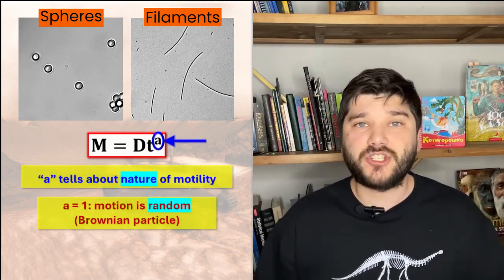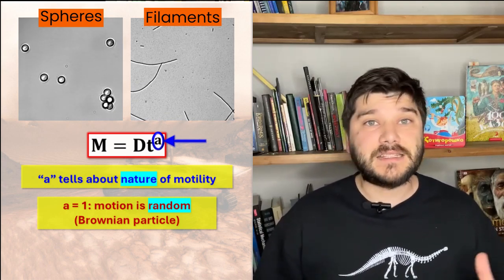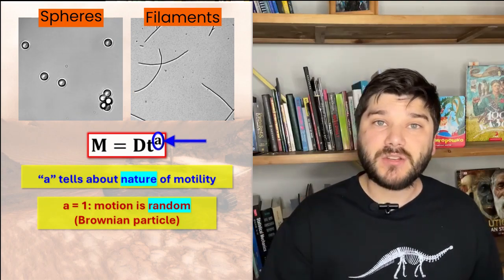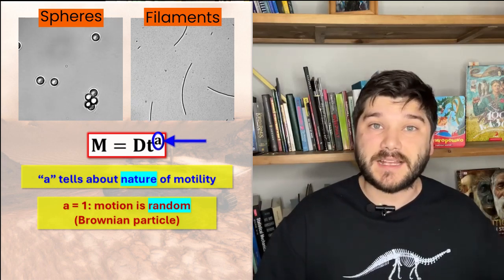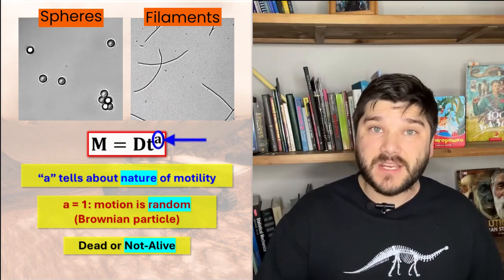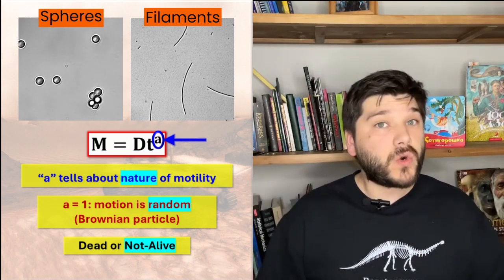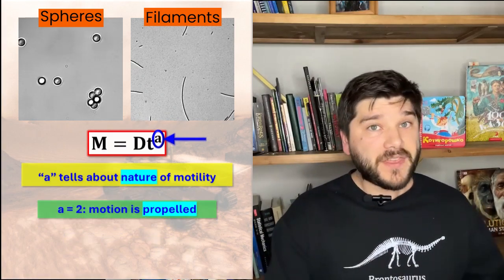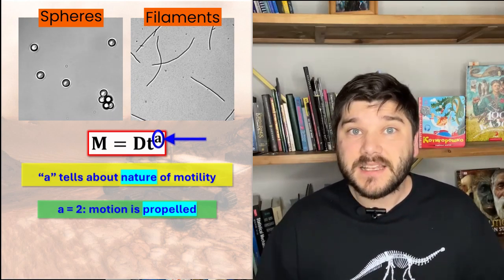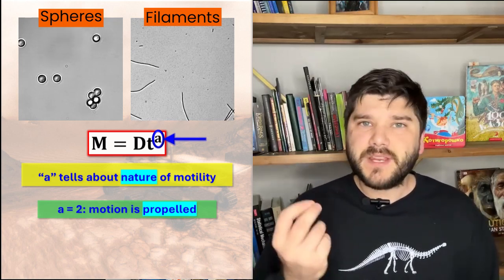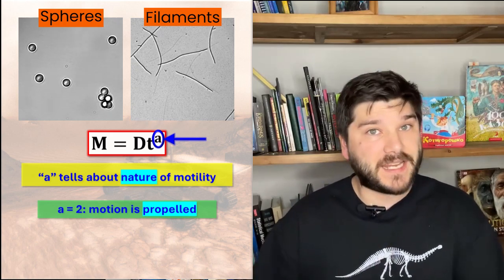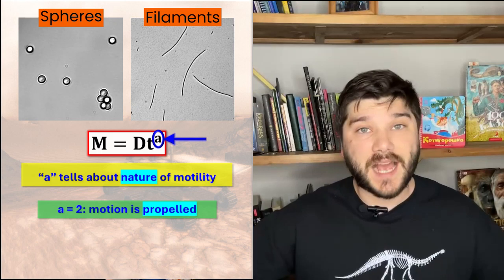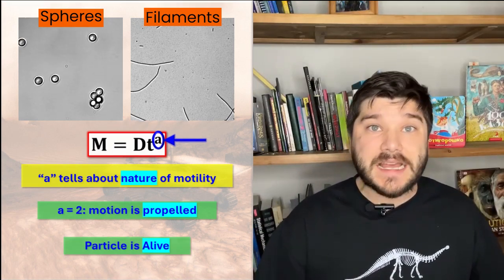When looking at the alien particles, the key parameter for us to determine is diffusion strength. This coefficient tells us about the nature of particle motility. If a equals 1, then the particle motility is totally random — this kind of motility is called Brownian motion. It happens when the particle is randomly bombarded by the atoms of the surrounding liquid or gas. In most cases, if a equals 1, then this particle is dead or not alive, because its motility is determined by the surrounding atoms and not by the particle itself. On the other hand, if a equals 2, it tells us that the particle does not care much about the surrounding atoms because it has its own motility or propulsion mechanism. If the particle has its own propulsion mechanism, it may have its own will on where and how to move. If the particle has its own will, it means it is alive.